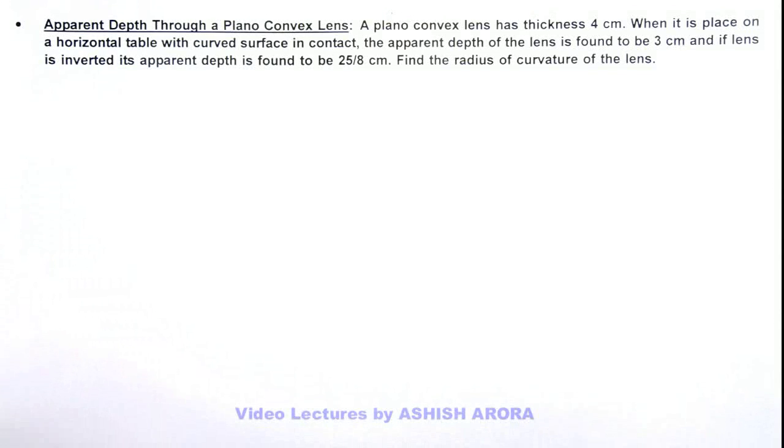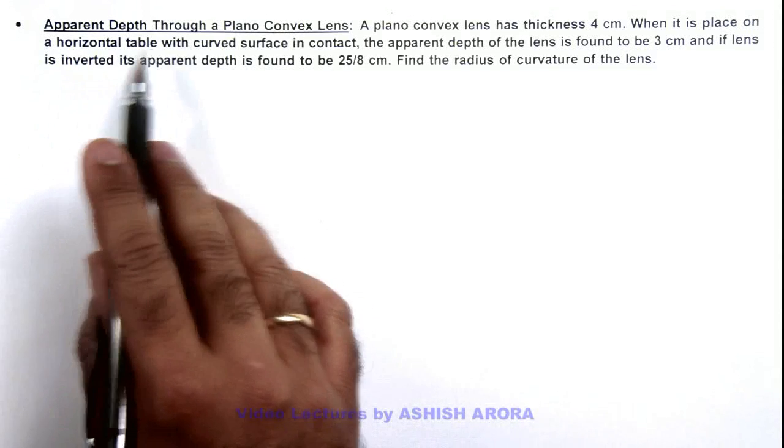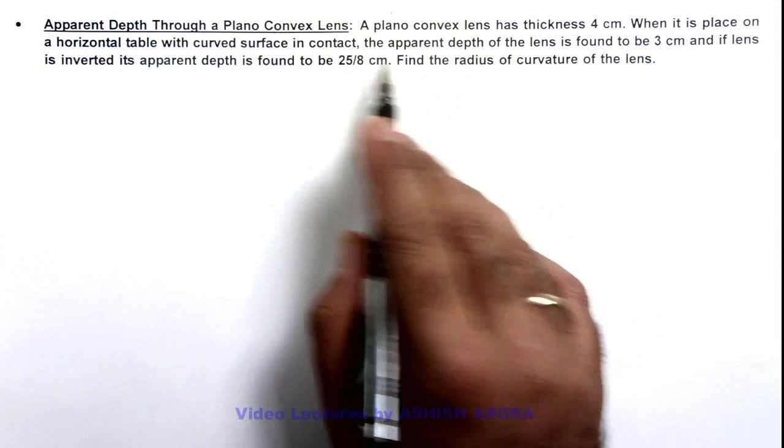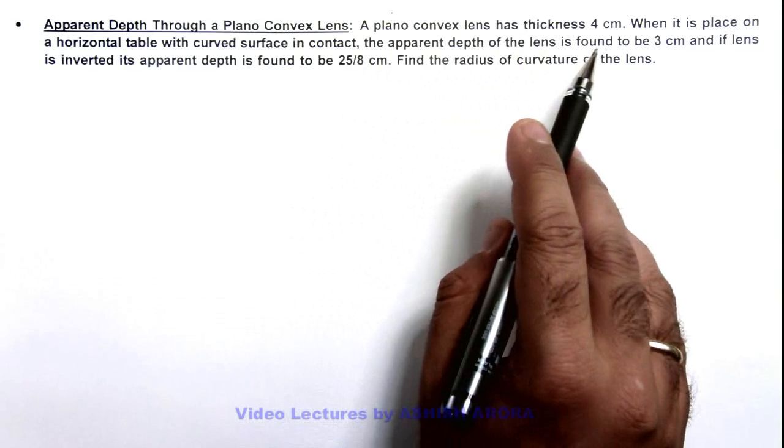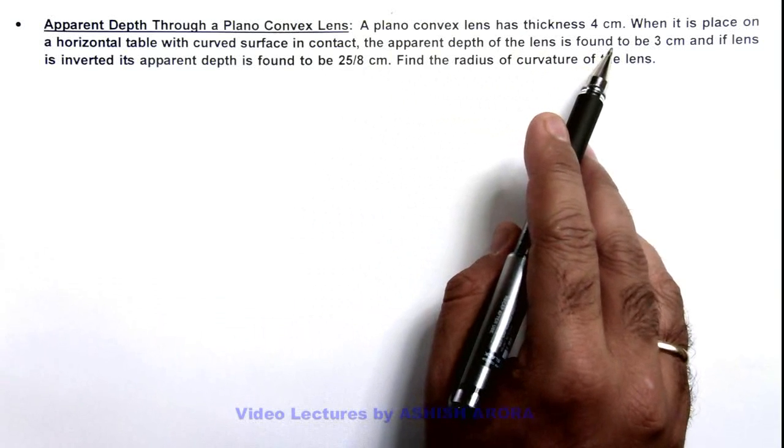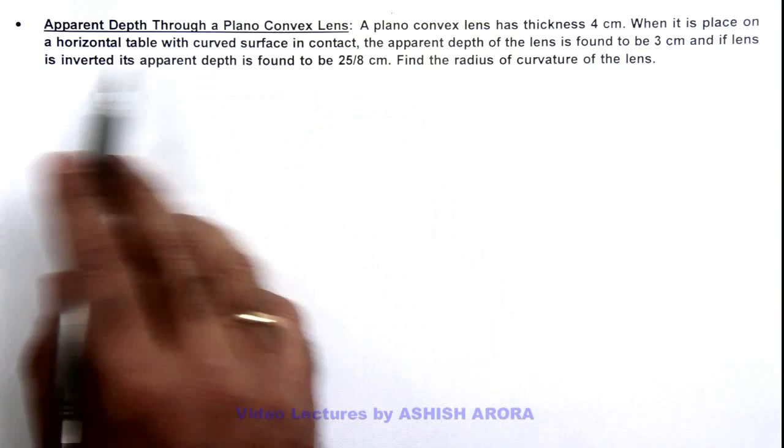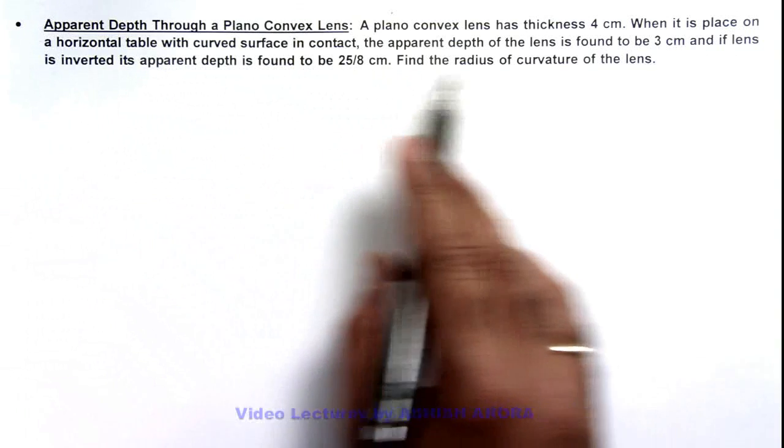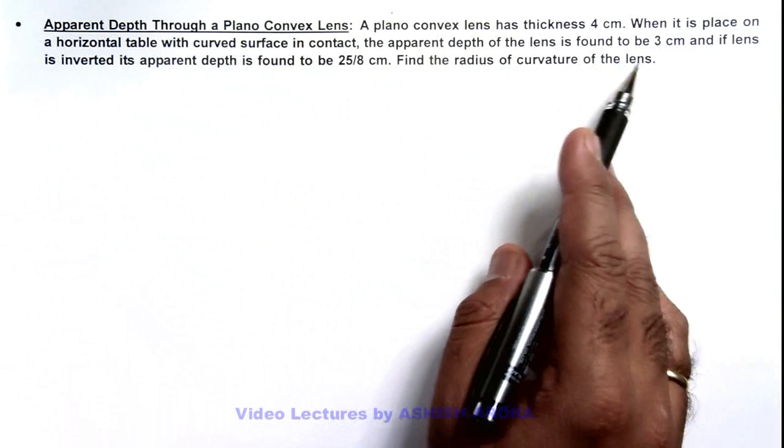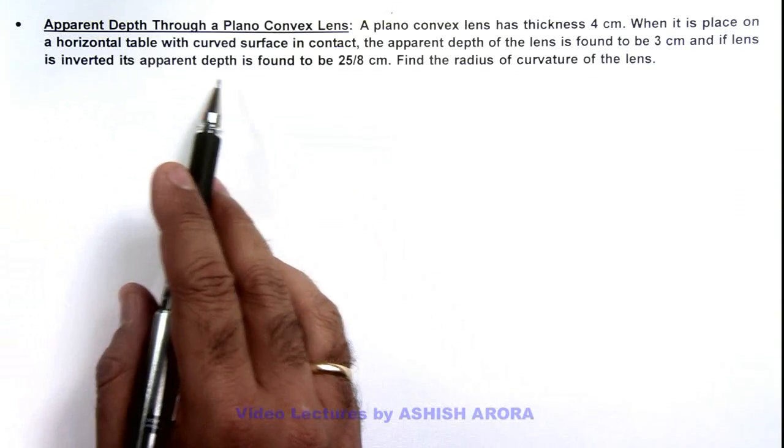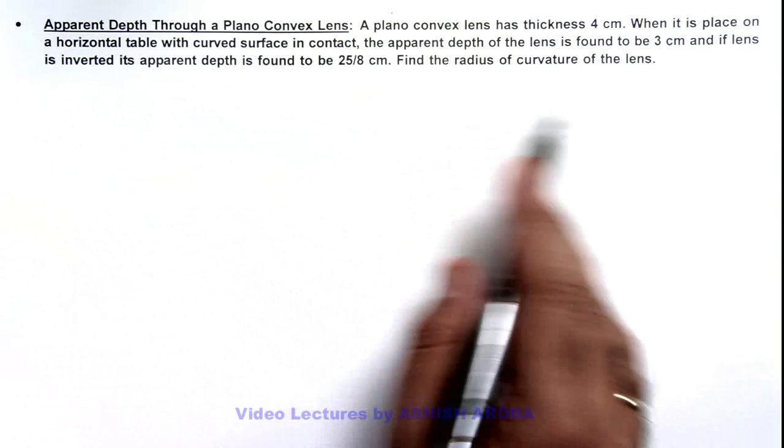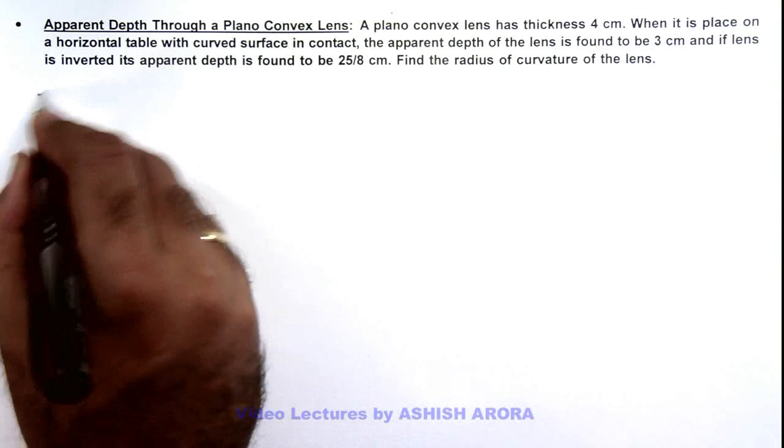In this illustration, we'll discuss the apparent depth through a plano convex lens. We are given that a plano convex lens has thickness 4 centimeters. When it is placed on a horizontal table with the curved surface in contact, the apparent depth of the lens is found to be 3 centimeters, and if the lens is inverted, its apparent depth is found to be 25/8 centimeters. We are required to find the radius of curvature of this lens.